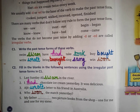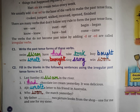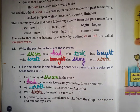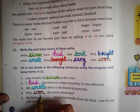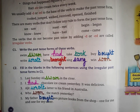Next sentence: 'My father ___ two picture books from the shop — one for me and one for my sister.' तो मेरे father ने shop से दो picture books खरीदीं। खरीदना मतलब 'buy', और buy की past form होगी 'bought'. तो यहाँ B-O-U-G-H-T, bought आएगा।